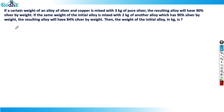Let's do this question from CAT 2021 Slot 3. The question is: if a certain weight of an alloy of silver and copper is mixed with 3 kg of pure silver, the resulting alloy will have 90% silver by weight. If the same weight of the initial alloy is mixed with 2 kg of another alloy which has 90% silver by weight, the resulting alloy will have 84% silver by weight. What is the weight of the initial alloy?